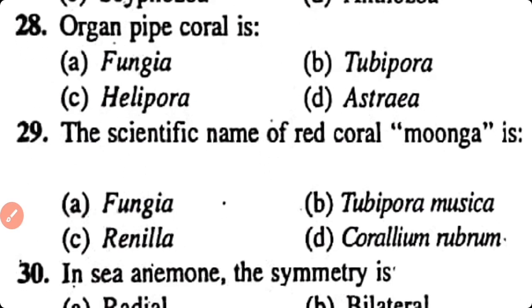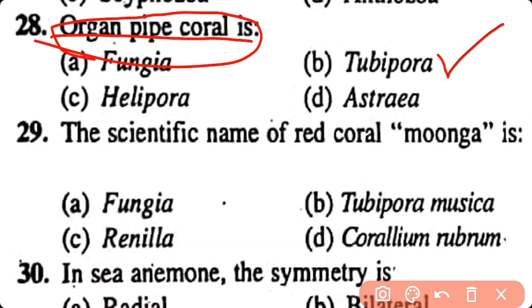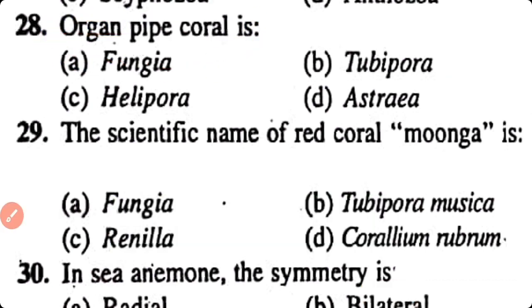Question number 28. Organ pipe coral is: Fungia, Tubipora, Halimeda, Astrea. Correct answer is option B. Tubipora is also known as organ pipe coral.